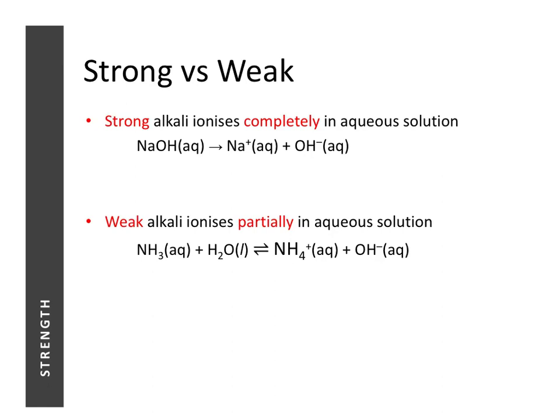The same applies for strong and weak alkalis. A strong alkali ionizes completely — for example, 100 units of sodium hydroxide will all ionize to form 100 units of sodium ions and 100 units of hydroxide ions. Ammonia is the classic weak alkali: only about one unit out of 100 ionizes, and the remaining 99 units stay unionized, contributing no alkaline properties.